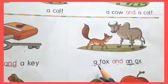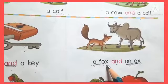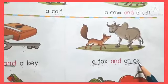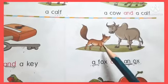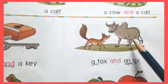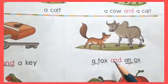So here, see: a fox and an ox. Ek lomri or ek bel.